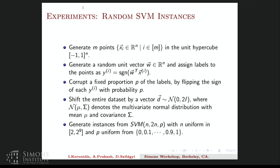And we perform this experiment over a wide range of values. Like this distribution, let's call it SVM(n, 2n, p). Let's fix m to be linear in n. And p is uniform from 0 to 1 in multiples of 0.1. And n is uniform in 2 to 2^9.